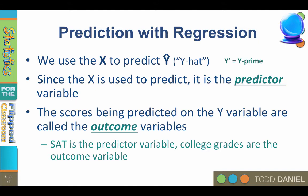For example, SAT score is the predictor variable and college grades are the criterion variable. Scores on the job pre-test are predictor variables, and job performance is the outcome variable. We use x to predict y.